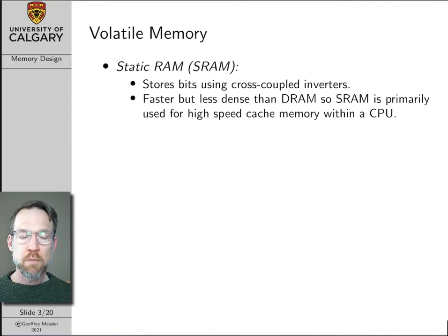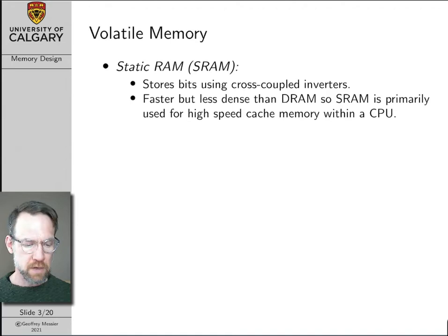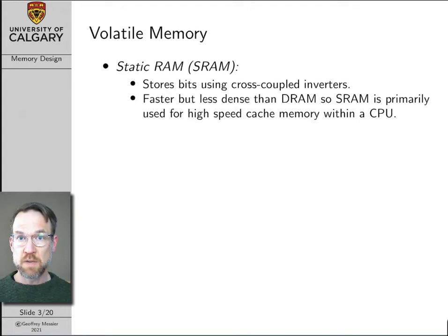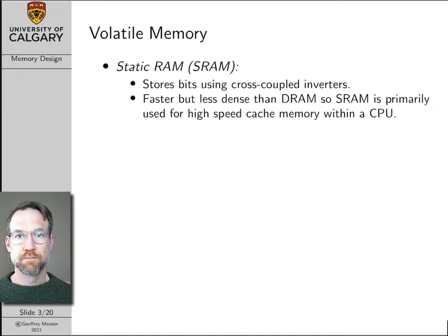The other type of volatile memory is static RAM, or SRAM. Static RAM stores bits using what's basically equivalent to a cross-coupled inverter — I'll show you that circuit a little bit later. It turns out that static RAM is actually faster than DRAM, but it's less dense. Because it's so quick, it tends to be used for high-performance memories close to, and sometimes inside, the CPU. Later on we'll talk about caches, which tend to be static RAM. Also, the data memory inside the AVR microcontroller is static RAM.